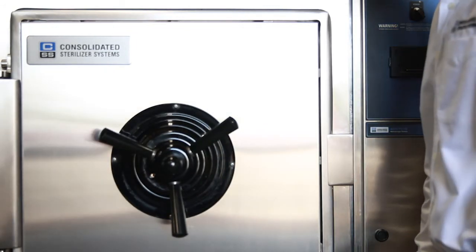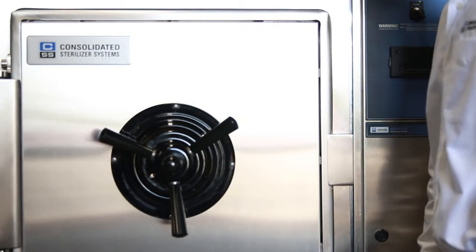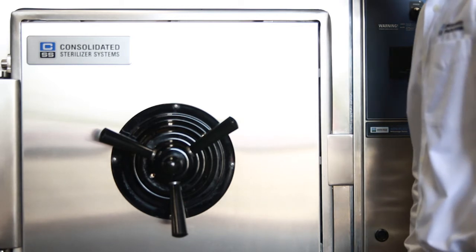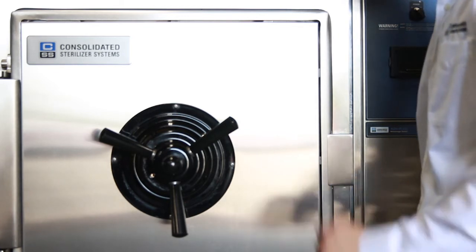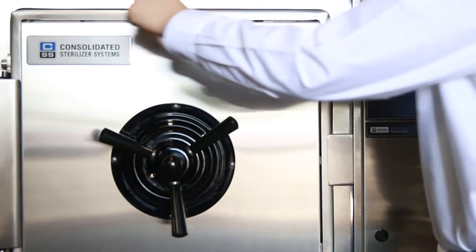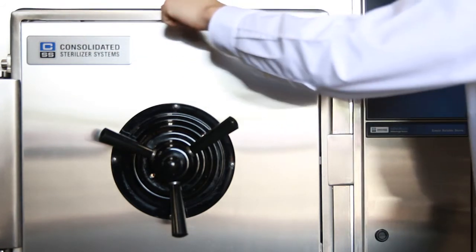The third way of determining whether or not the door gasket needs to be replaced is if you see any leaking steam in between the door and the end ring anywhere along the top, sides or bottom.